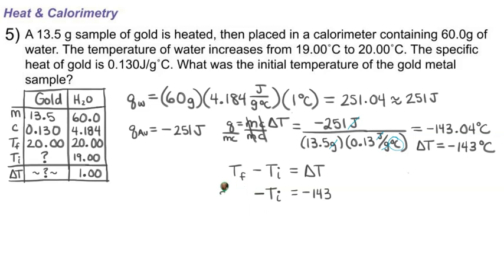Right away, since I have negative T initial and I don't want negative to be on our variable, the thing that we're solving for, I'm going to multiply this whole thing by negative one to move my negative sign to the other side. So I get negative 20 plus T initial equals positive 143. I'm just switching where my negative sign is. This makes it a lot easier to move the 20 to the other side of the equation. Then the 20 cancels out and I'm left with positive T initial equals 163.